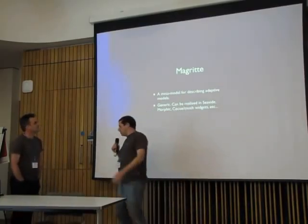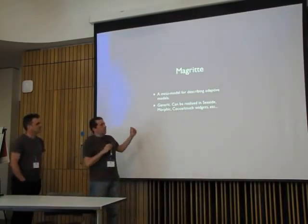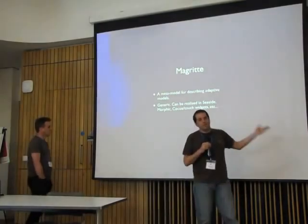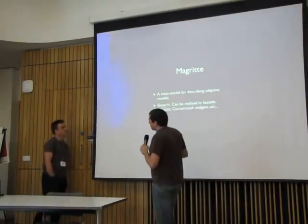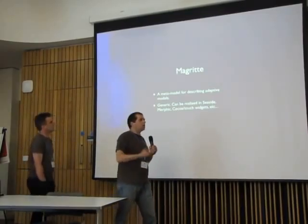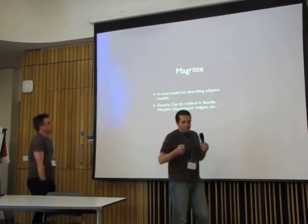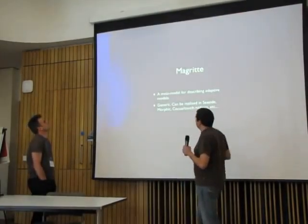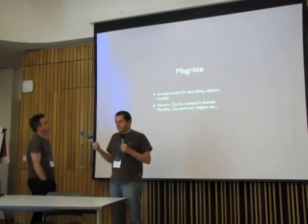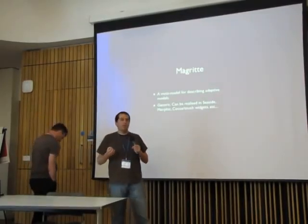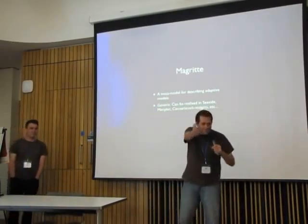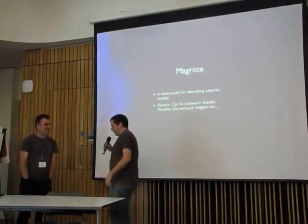The purpose of this slide is to let you know that you can render Magritte objects using Magritte in different behaviors, all completely different. You can interpret and use those descriptions to produce a lot of different behaviors in your program. It's very useful and very time-saving, with a lot of translators.